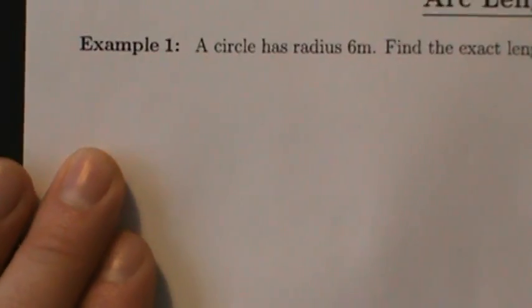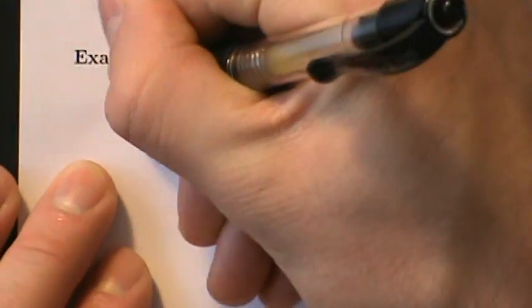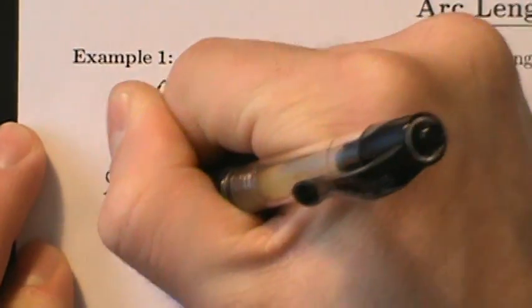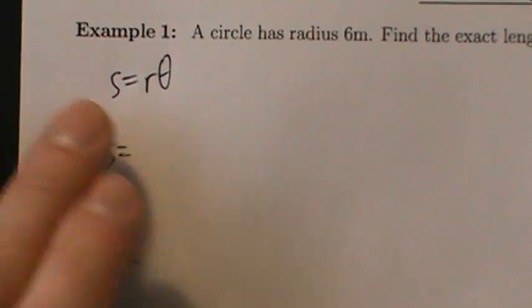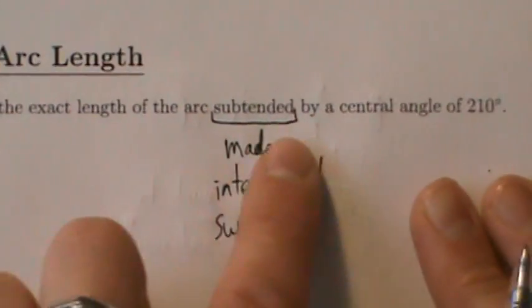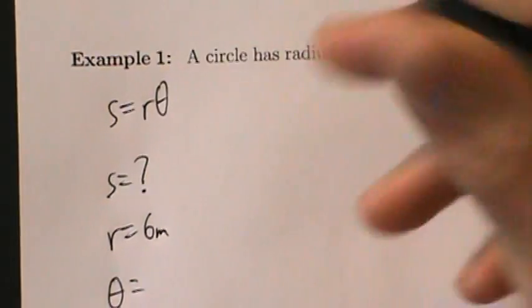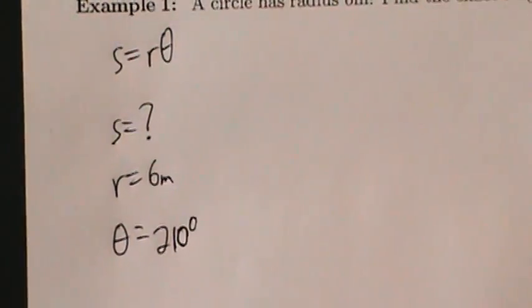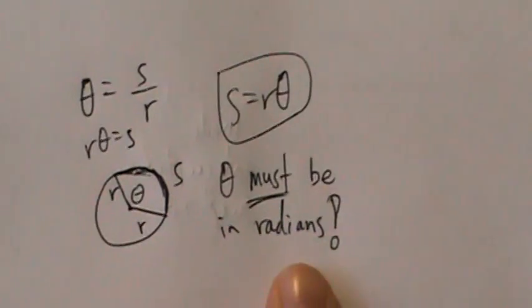Before we start problems like this, it's always good to write down the formula s = r*theta, and then s = , r = , theta = . So a circle has radius 6 meters, so r = 6 meters. We're looking for the arc length, so we're looking for s. And we're told that theta is 210 degrees. Be careful — we can't just plug these directly into the formula because theta is in degrees, and theta has to be in radians before we can use this formula.